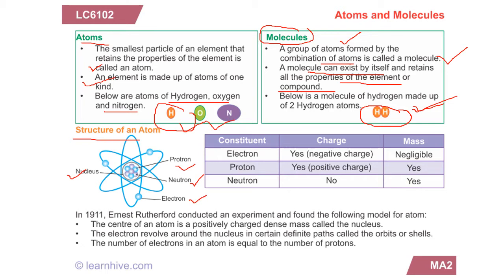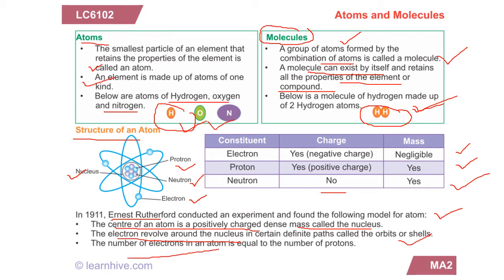Electrons are negatively charged and negligible in mass. Protons are positively charged and they have mass. Neutrons do not have any kind of charge but they have mass. According to Ernest Rutherford, he conducted an experiment and found the following model for the atom: the center of an atom is a positively charged dense mass called the nucleus, and electrons revolve around the nucleus in certain definite paths called orbits or shells, and the number of electrons in an atom equals the number of protons.